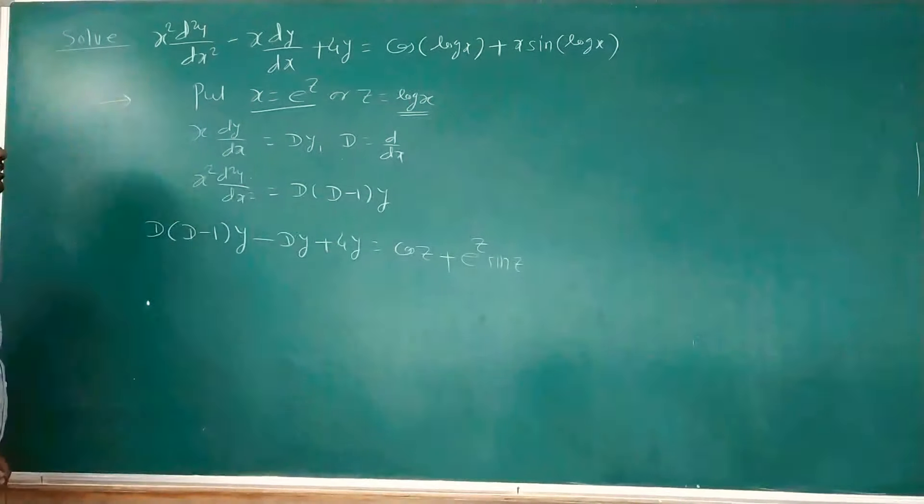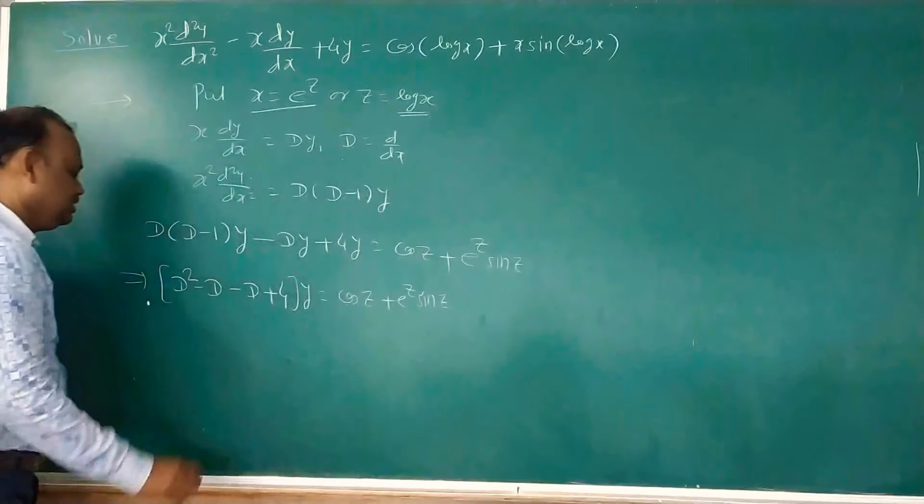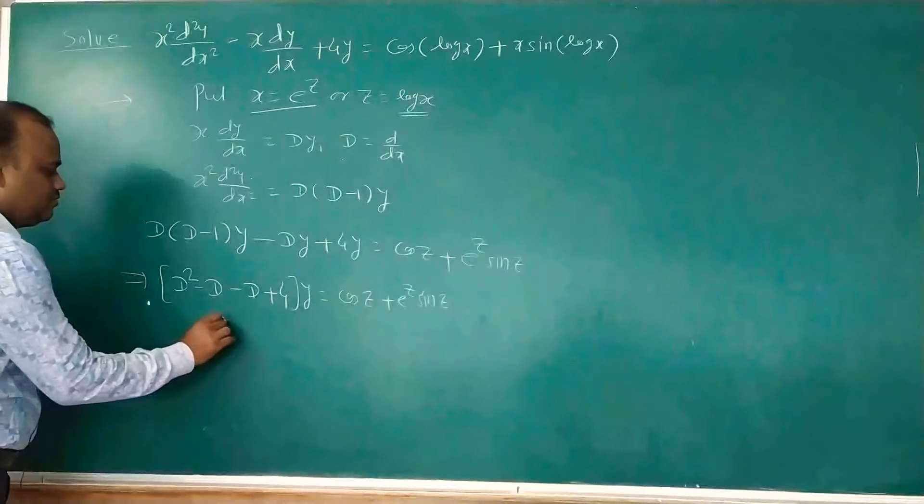From the LHS, taking y common and expanding, D·D gives D², minus D, minus D, plus 4. So the equation becomes (D² − 2D + 4)y = cos z + e^z·sin z, which is of the form φ(D)·y = f(z).